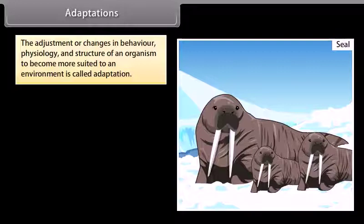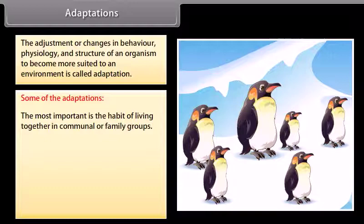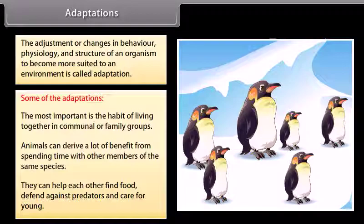Adaptations: The adjustment or changes in behavior, physiology, and structure of an organism to become more suited to an environment is called adaptation. One of the most important adaptations is the habit of living together in communal or family groups. Animals can derive a lot of benefit from spending time with other members of the same species — they can help each other find food, defend against predators, and care for young. Several animal species including scorpion fish and leaf frogs can change their appearance to match their surroundings.